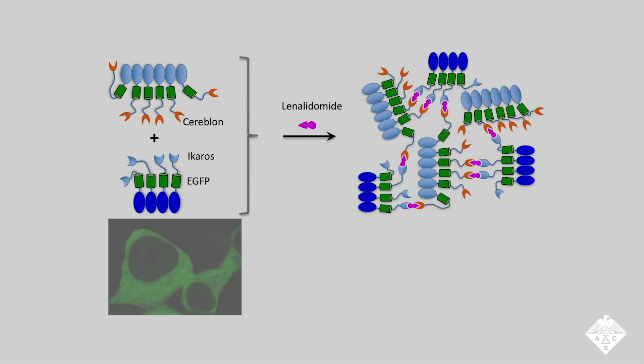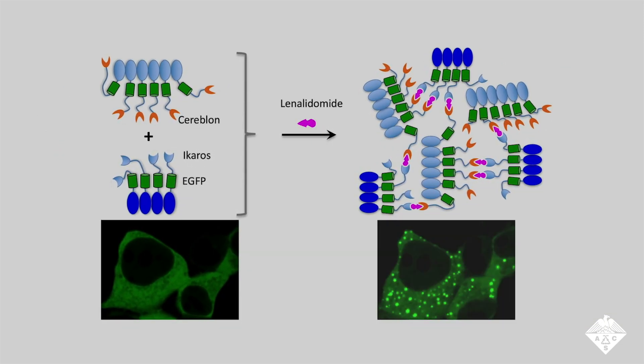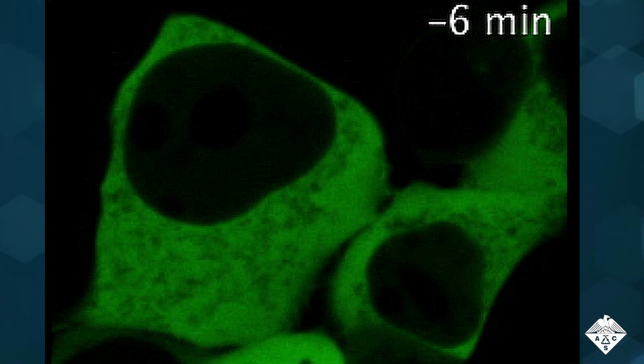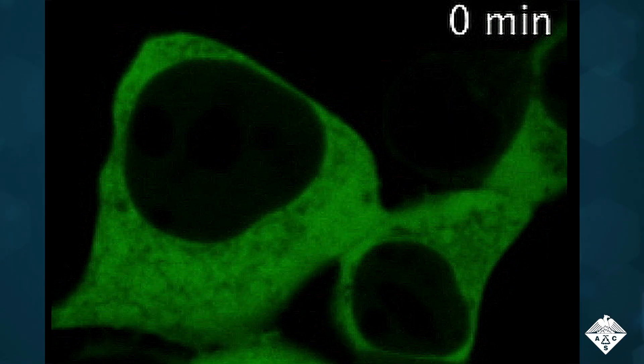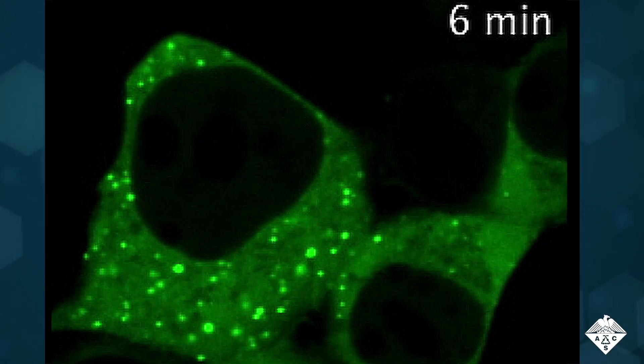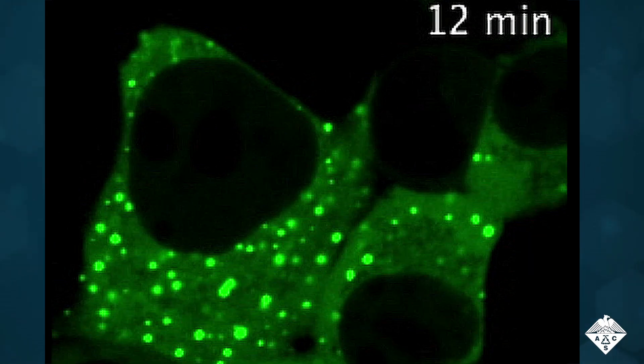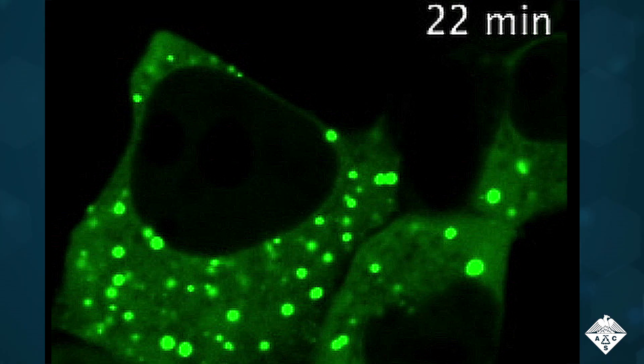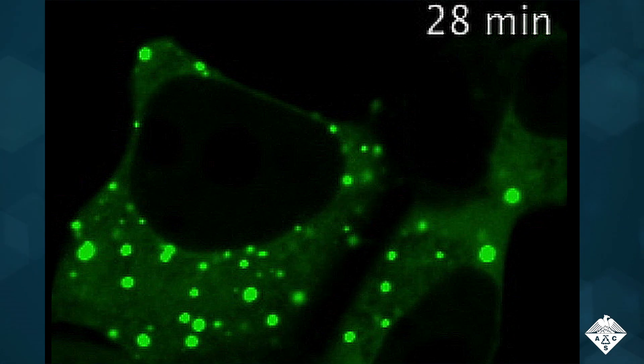This way, when Cereblon and Ikaros did interact with each other through lenalidomide, the GFP signal would be greatly amplified. In the absence of lenalidomide, the cells showed a faint, diffuse green fluorescence. When the team added lenalidomide to the cells, thousands of GFP-containing proteins coalesced into highly concentrated bright green droplets.